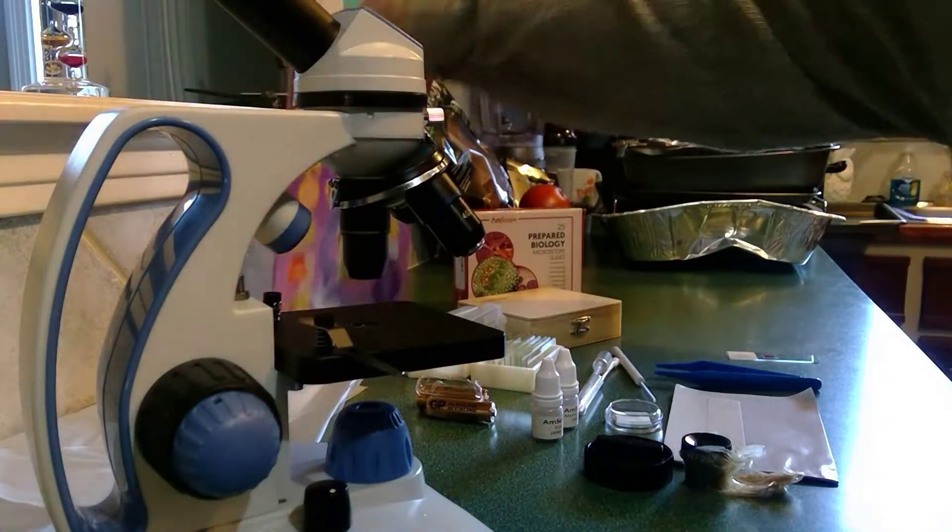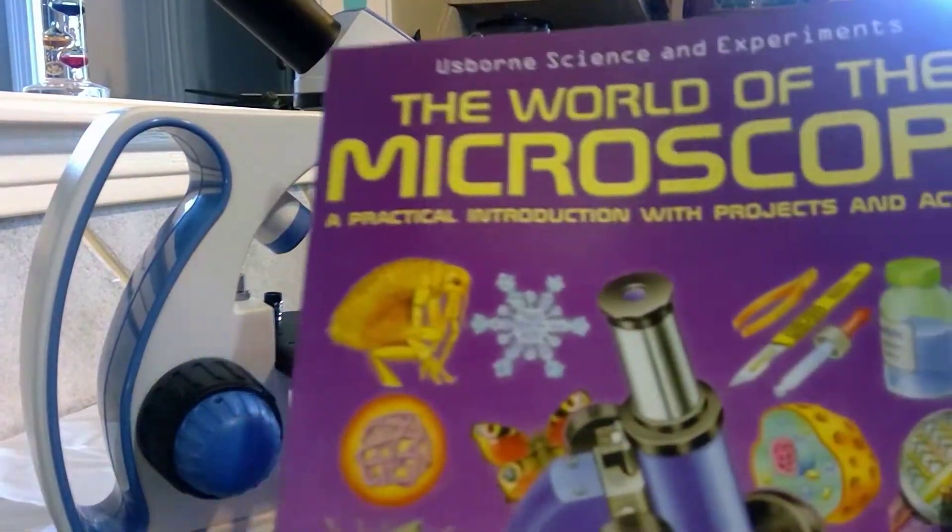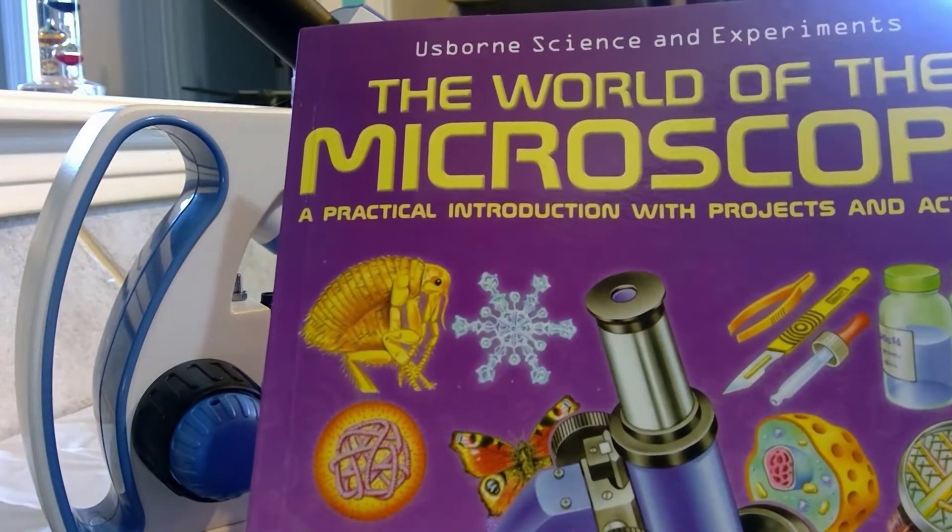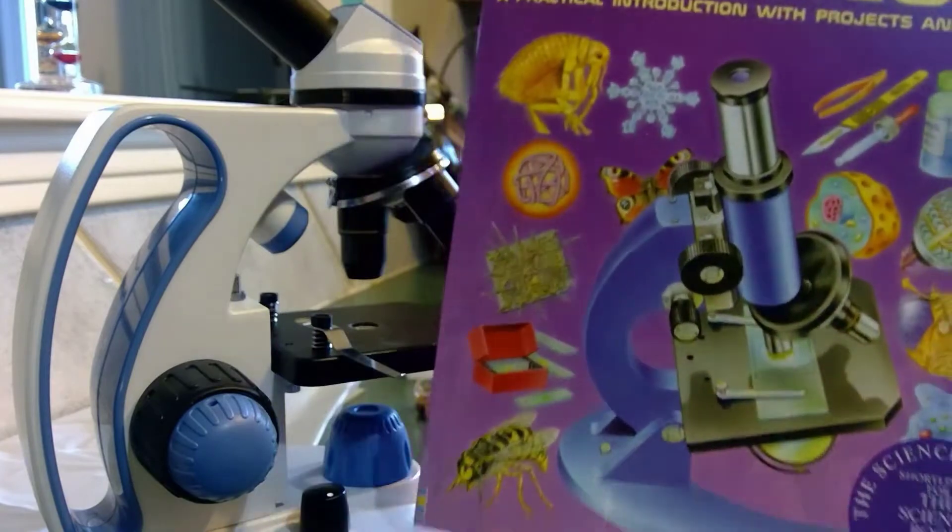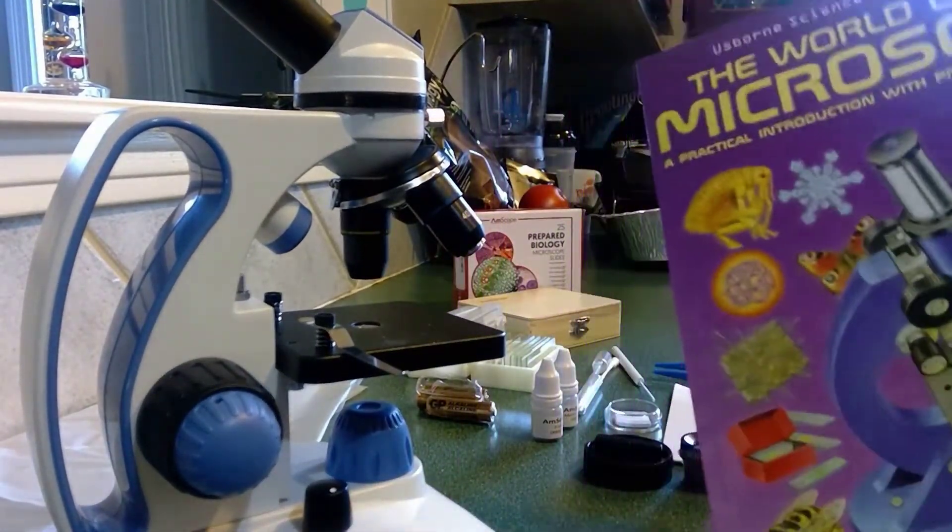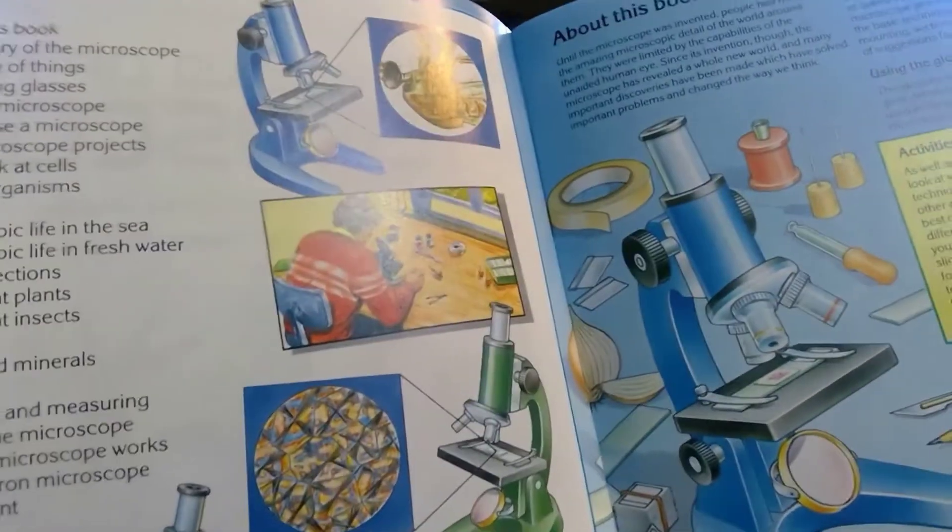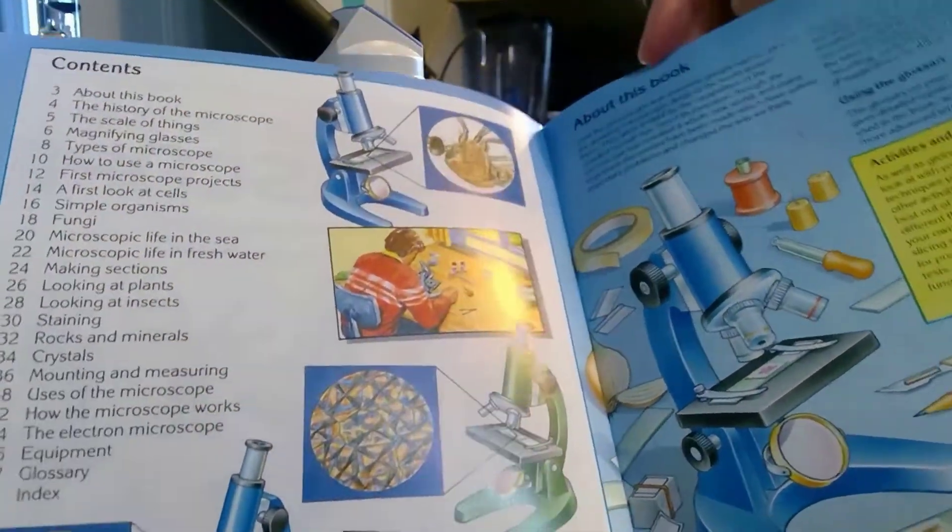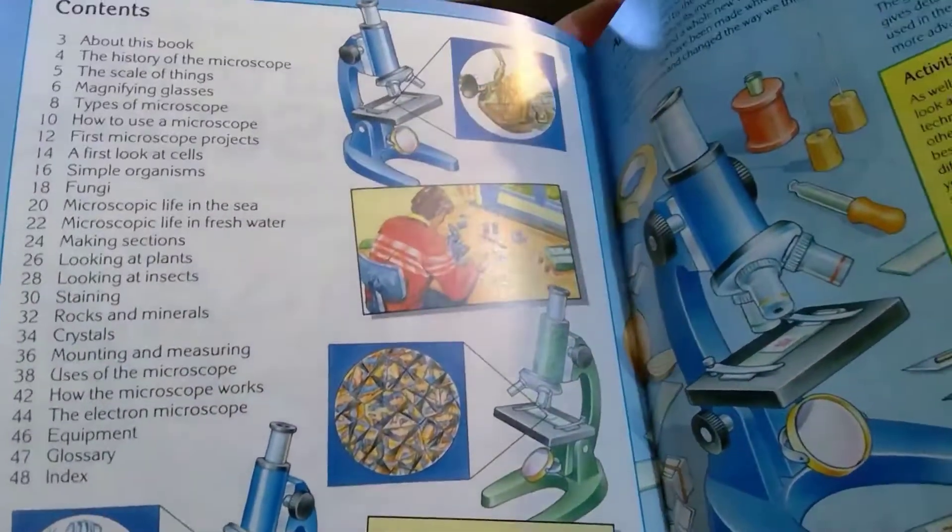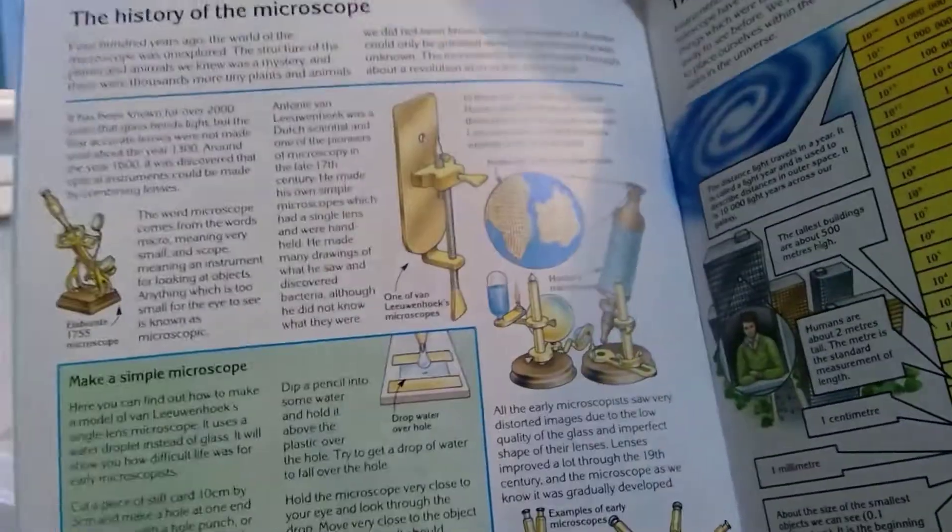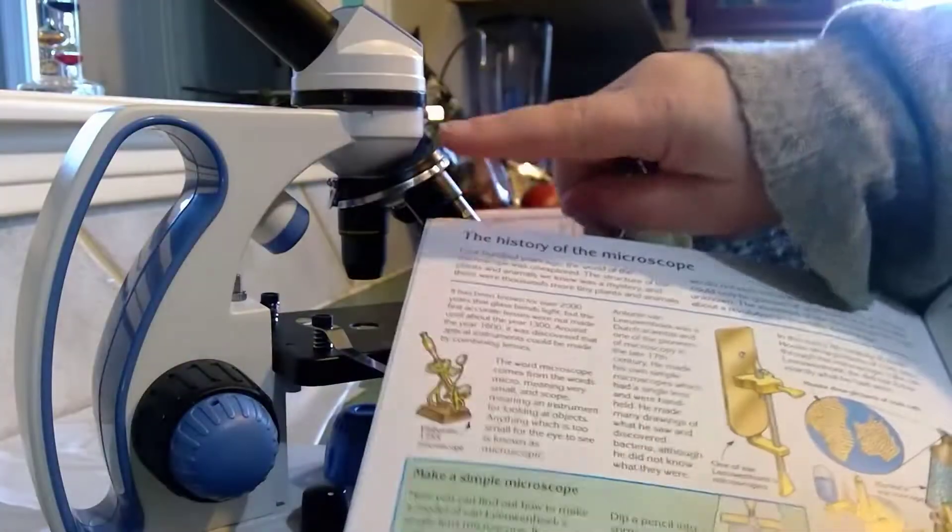It comes with this Usborne science and experiments book, The World of Microscopes. This is really a great book, and it really goes in-depth about the things that you need to know about a microscope. It goes in-depth about the parts of a microscope, because I think the only thing that I've found so far with getting this microscope is that it doesn't come with instructions on how to use this specific microscope. It comes with this book, but this book isn't for this microscope.